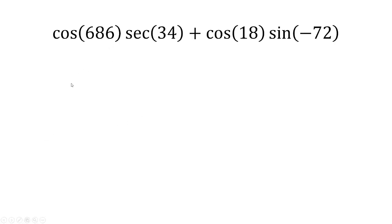Let's first start off with cosine of 686 degrees. Because 686 degrees is greater than 360, we're going to subtract 360 from it. So evaluating cosine of 686 is the same thing as evaluating cosine of 34.